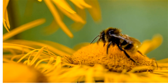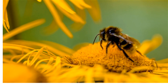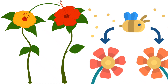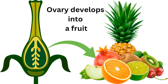Do you know what pollination is? The transfer of pollen grains from the anther to the stigma of the same flower or a different flower is called pollination. Do you know which part of the plant develops into a fruit? It is the ovary — the ovary develops into a fruit.